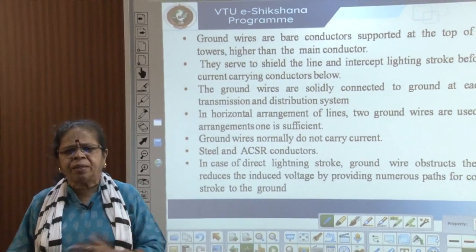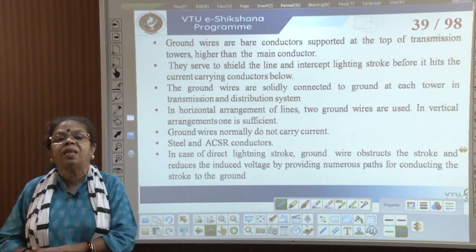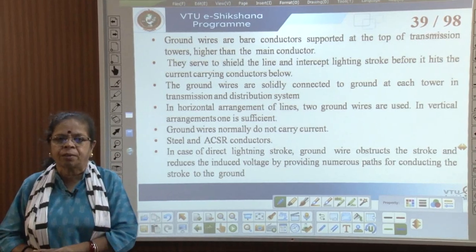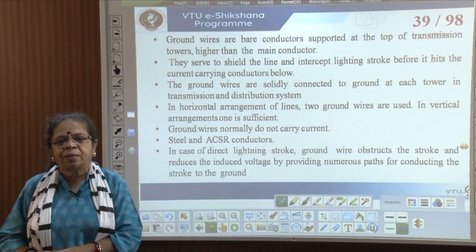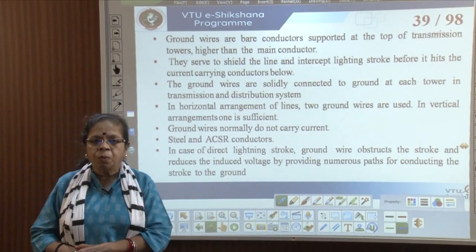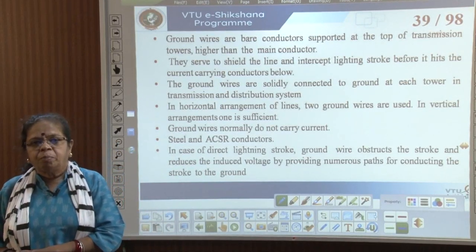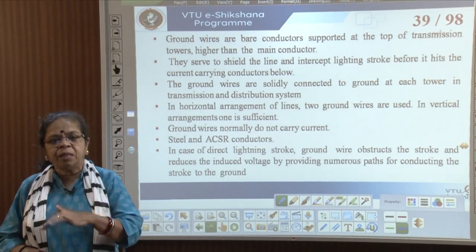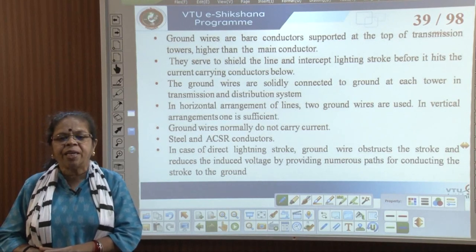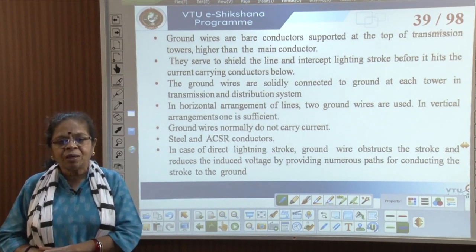Ground wires are bare conductors supported at the top of transmission towers, higher than the main conductor, so that lightning strikes the ground wire before striking the transmission lines. They serve to shield the line and intercept the lightning stroke before it hits the current-carrying conductors below. These ground wires are solidly grounded at each tower, both in the transmission system and in the distribution system.